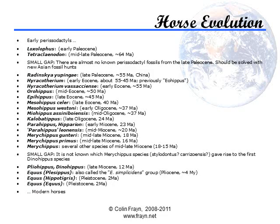The evolution of the horse is another one often quoted by creationists as an animal that just sprung into being with a huge gap in the fossil record, failing to explain its origins. As you can see from the size of the font I've had to use on this slide just to fit in the number of specimens we have, this is demonstrably false. There are specimens from 64 million years ago right up to the present day, with only a couple of small gaps, and no doubt these will be filled soon.